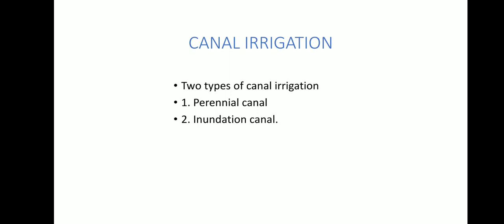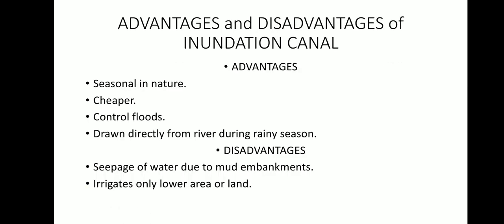Canal irrigation has two types: inundation canal and perennial canal. The inundation canal is seasonal in nature — it can only be used during the rainy season. It is cheaper and helps control floods. During the rainy season when the river gets flooded, farmers cut drains toward their farms so the water irrigates the land. Disadvantage: seepage occurs due to mud embankments, which can cause marshy areas or breeding grounds for mosquitoes. It also only irrigates lower-lying areas, not high ground.